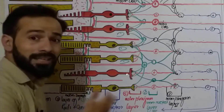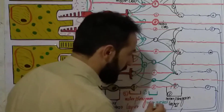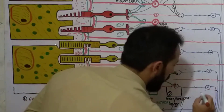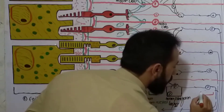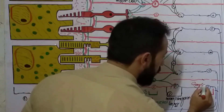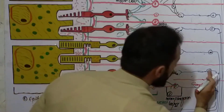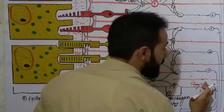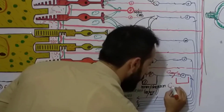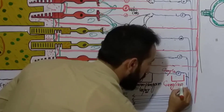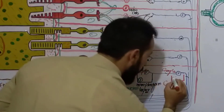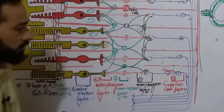We said about 10 layers are present — this was the seventh. Now moving towards the inside further, here are the nuclei of the ganglion cells. So there is a layer of ganglion cell nuclei. That's why we say: ganglion cell layer. This is our eighth layer.